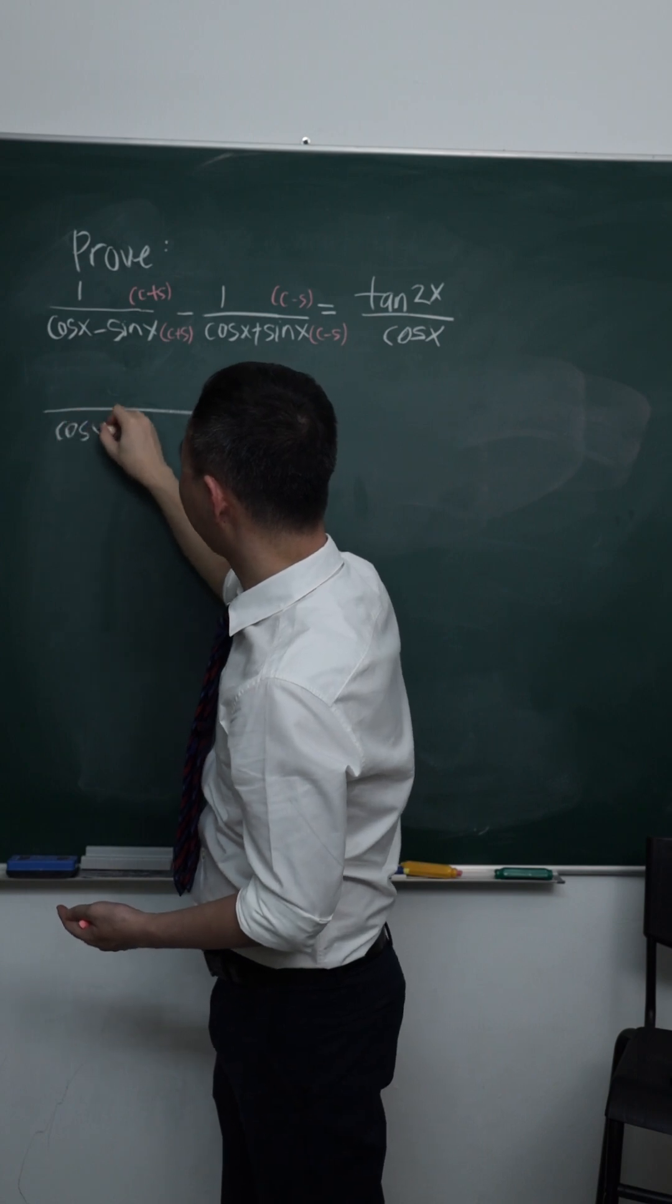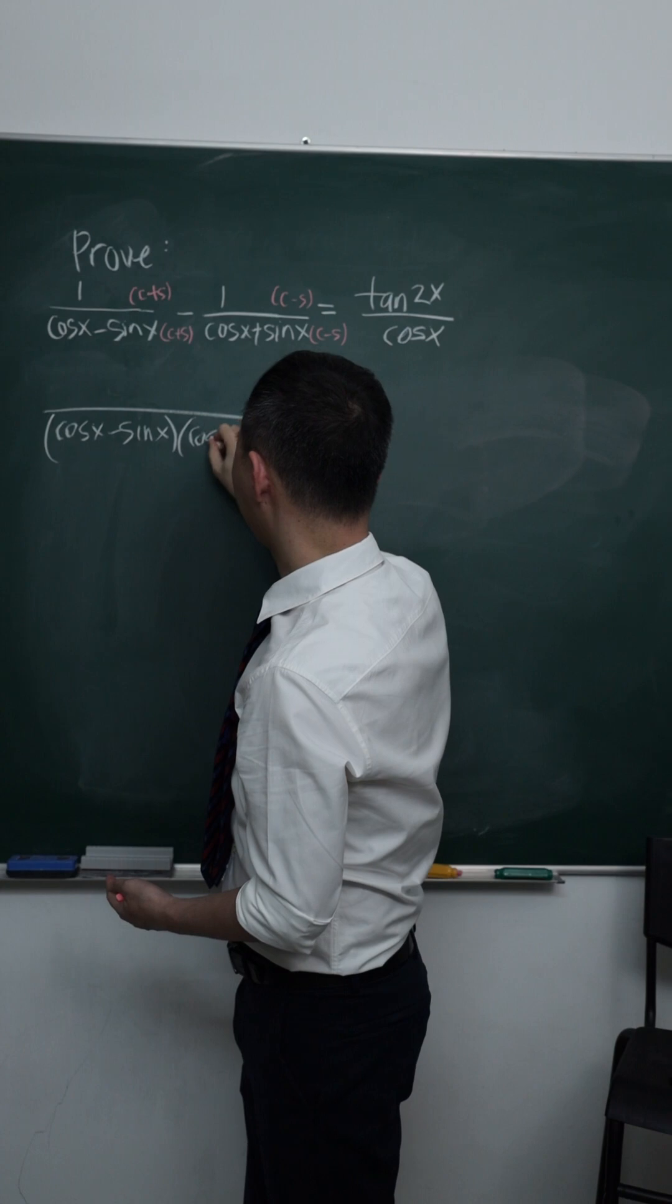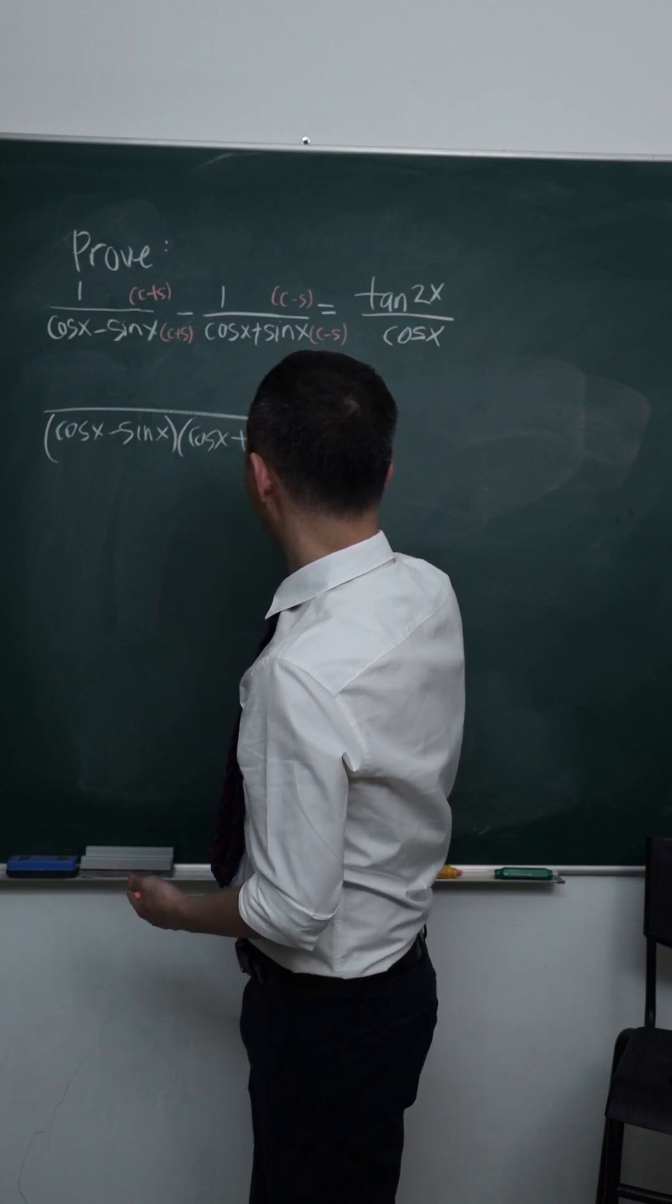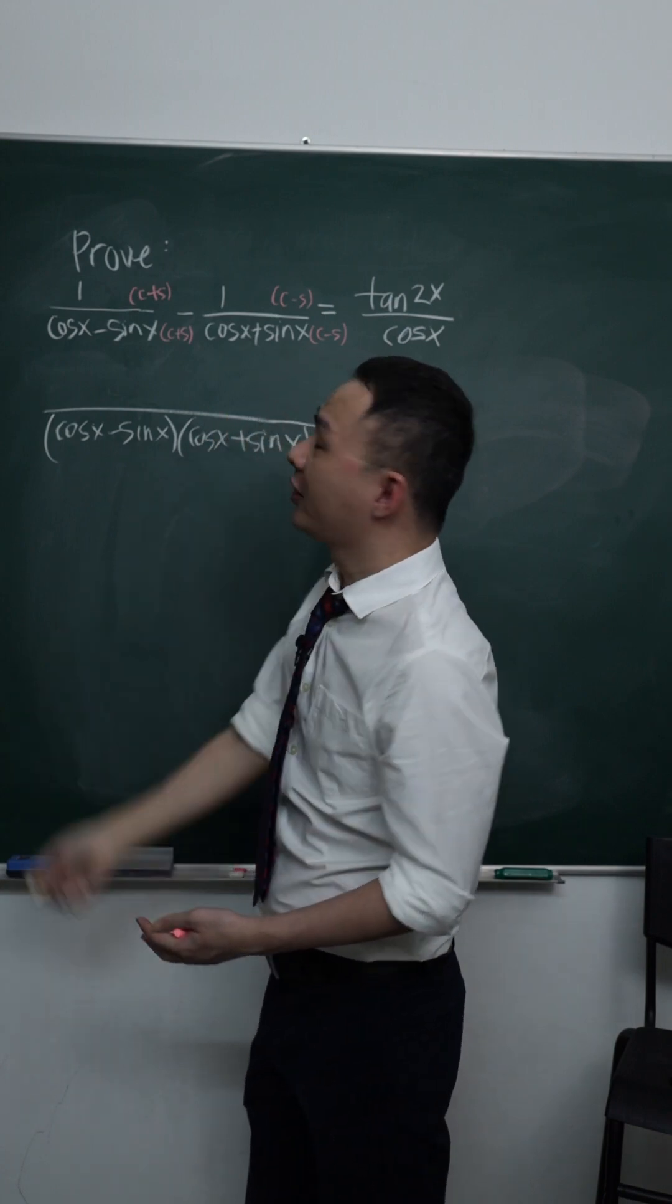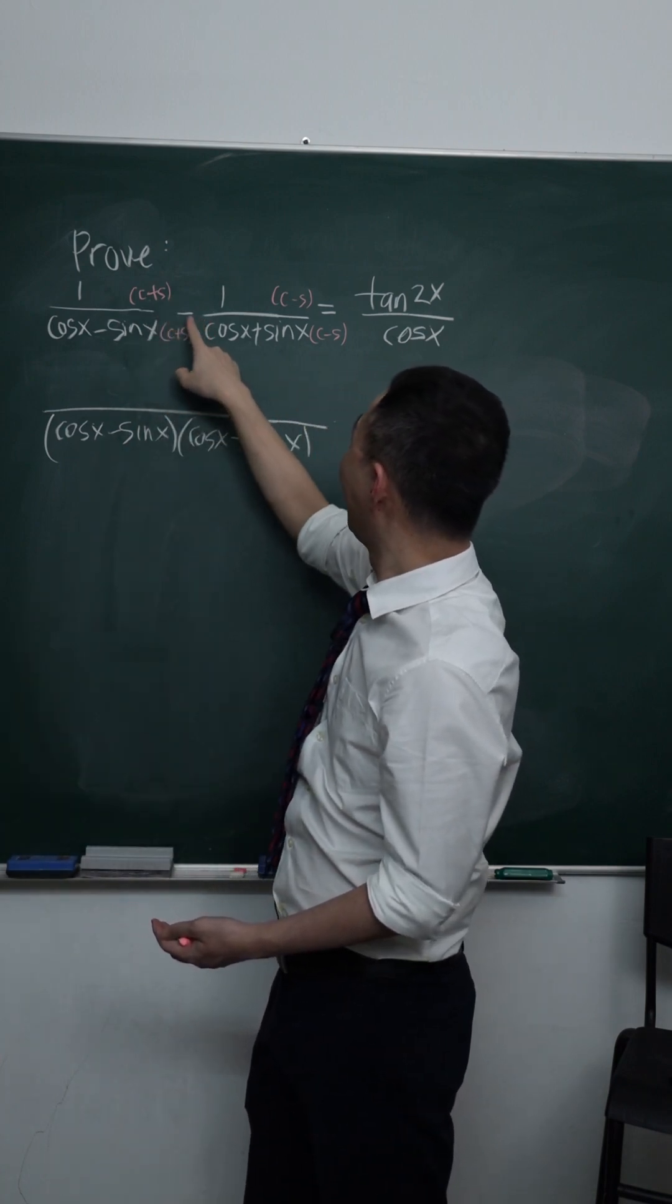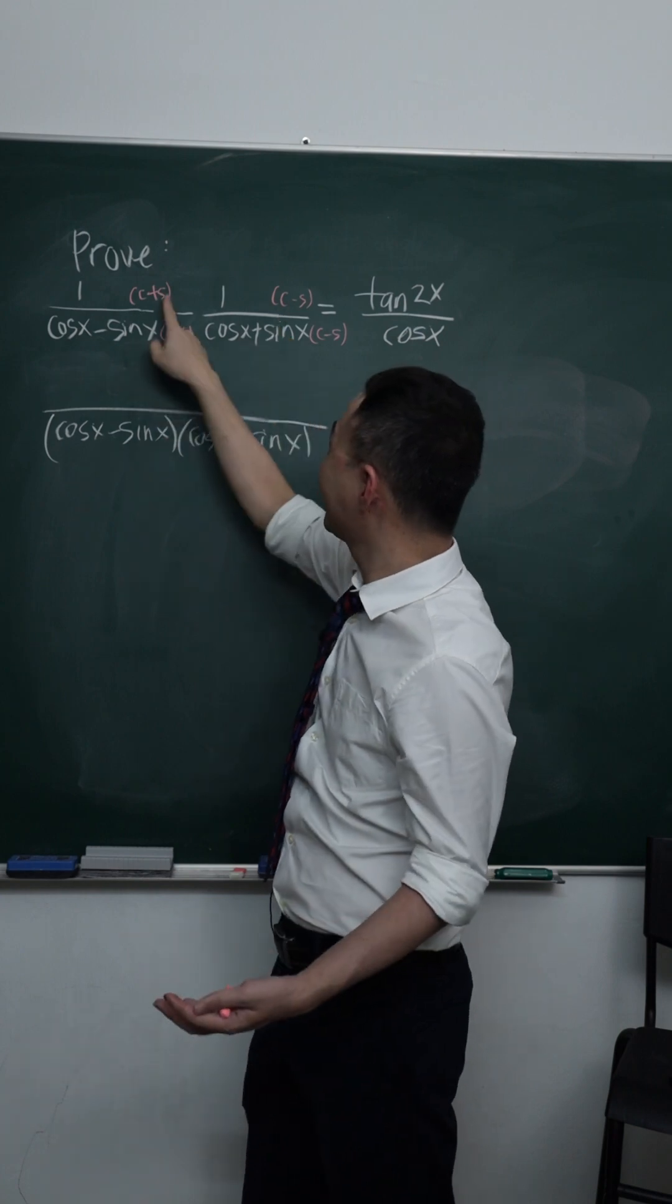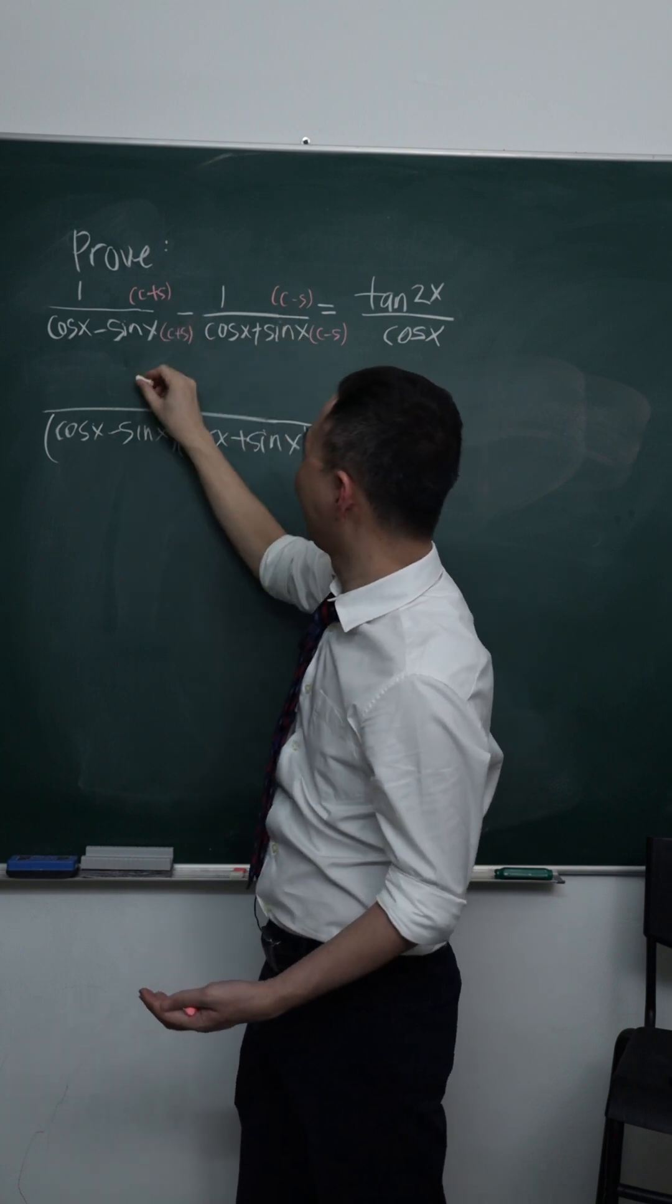So here I will get cos x minus sin x, multiply with cos x plus sin x. Okay, so the top I actually have cos plus sin minus cos minus sin. Cos minus cos get zero. Sin minus negative sin get two sin x.